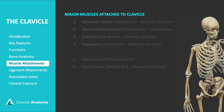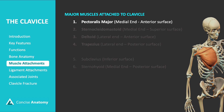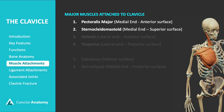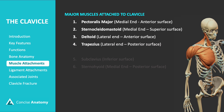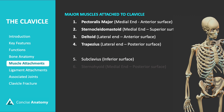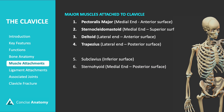Several important muscles attach to the clavicle. On the medial end of the shaft, we have the pectoralis major on the anterior surface and the sternocleidomastoid on the superior surface. On the lateral end, the deltoid attaches to the anterior surface, while the trapezius attaches to the posterior surface. Underneath, the subclavius attaches to the inferior surface, and the sternohyoid is found on the posterior surface of the medial end.